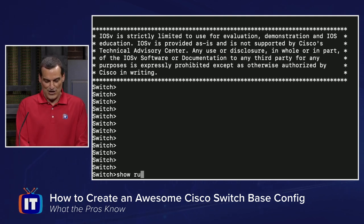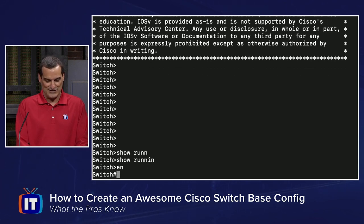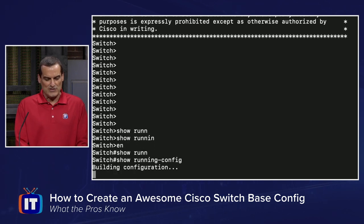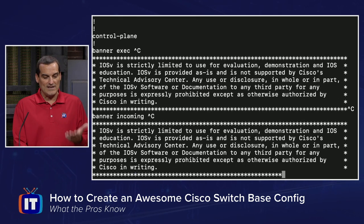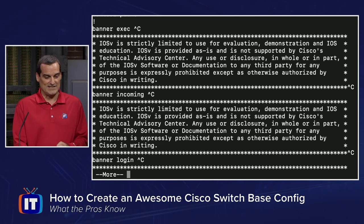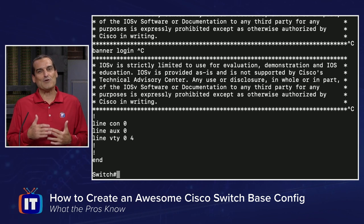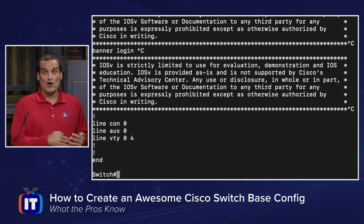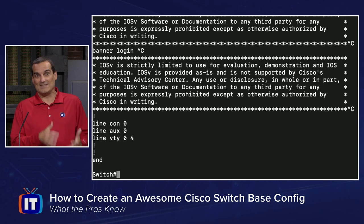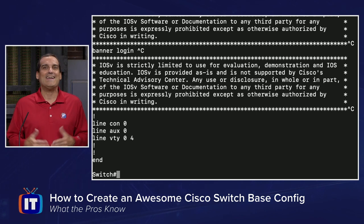If I do a show running configuration on this device — and in order to see the running configuration, we need to get into privilege mode — you'll see what Cisco has done. They have gone in and done an exec banner message, an incoming banner message, a login banner message, and all of those have the exact same text. They're ensuring that this banner message, which contains important copyright and legal information, is always displayed no matter how the user accesses the device. This is a great practice and we'll want to do the same thing.